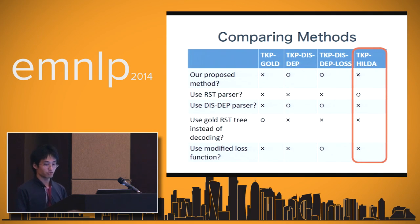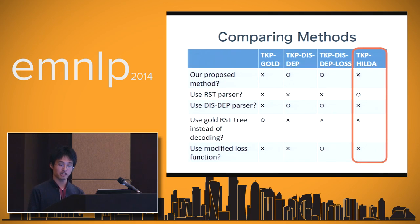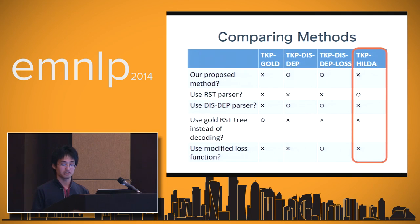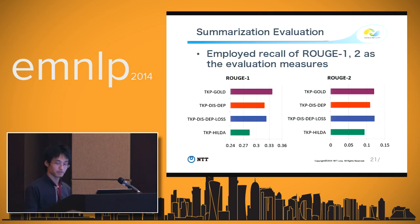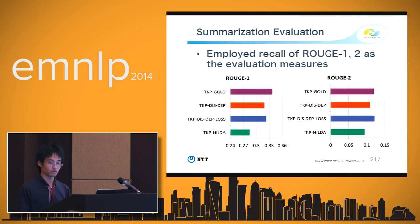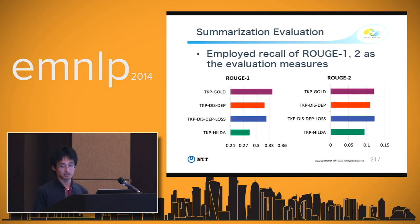The last system is Tree-Knapsack HILDA, our baseline. HILDA is one of the state-of-the-art RST parsers, trained on the RST-DT. When making a summary, a document is parsed into RST-DTs and then converted to DEP-DTs via a simple transformation rule. The summarization evaluation results show that our proposed methods outperform Tree-Knapsack HILDA and achieve almost the same ROUGE score as Tree-Knapsack Gold, evaluated using ROUGE-1 and ROUGE-2 recall.